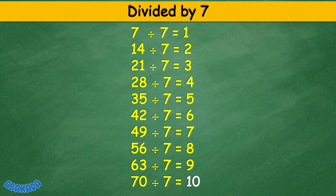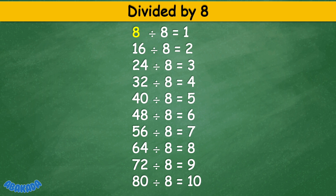70 divided by 7 equals 10. Divided by 8: 8 divided by 8 equals 1, 16 divided by 8 equals 2, 24 divided by 8 equals 3, 32 divided by 8 equals 4, 40 divided by 8 equals 5, 48 divided by 8 equals 6, 56 divided by 8 equals 7, 64 divided by 8 equals 8, 72 divided by 8 equals 9, 80 divided by 8 equals 10.